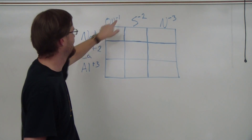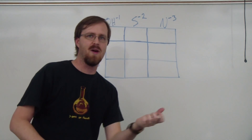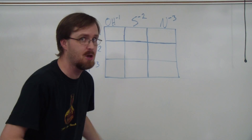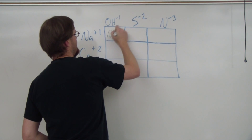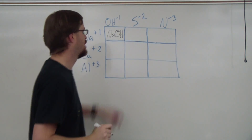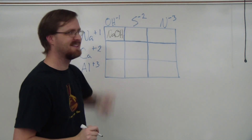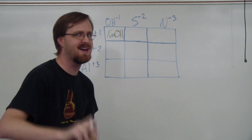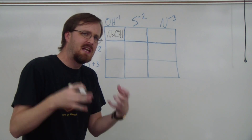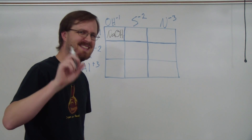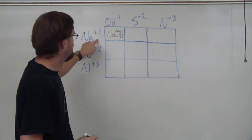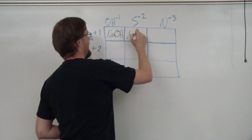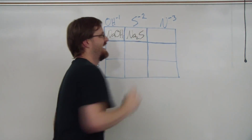Our first one up: sodium and hydroxide. We have a plus one and a negative one that already add up to zero, so we just need one of each. That is NaOH. Next one up: sodium and sulfur. We have a positive one and a negative two — they do not add up to zero, so we need to figure out the lowest common multiple, which in this case is two. So I need two sodiums to balance out the negative two from the sulfur. We have Na2S.